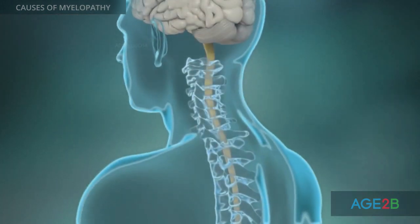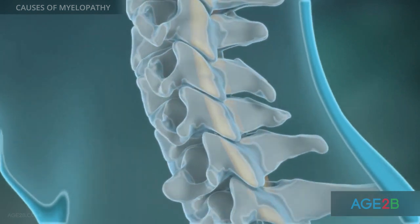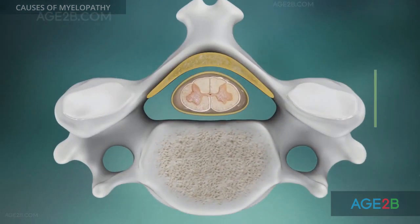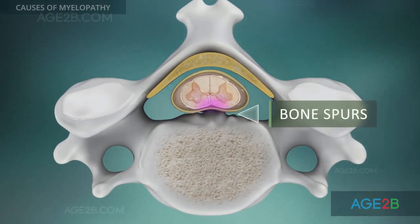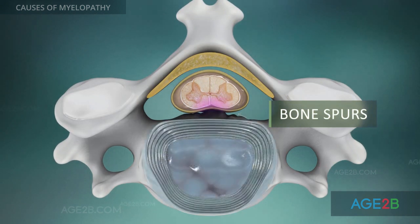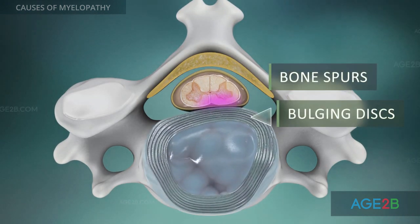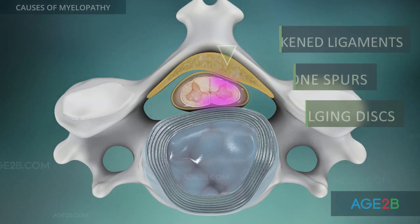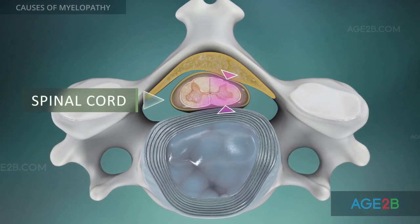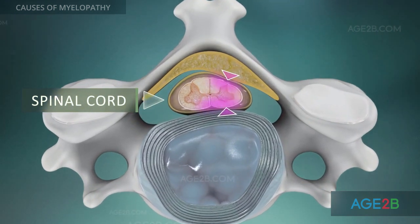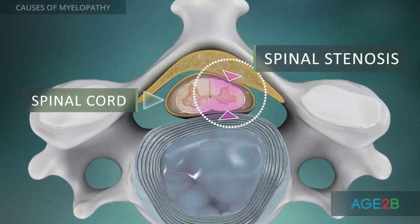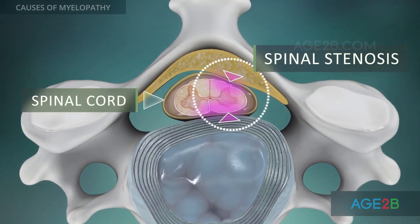With age, the spinal canal can become narrow because of degenerative processes. Bone spurs, bulging discs, or thickened ligaments may take up room in the spinal canal and compress the spinal cord. This condition is called spinal stenosis and it is a common cause of myelopathy.